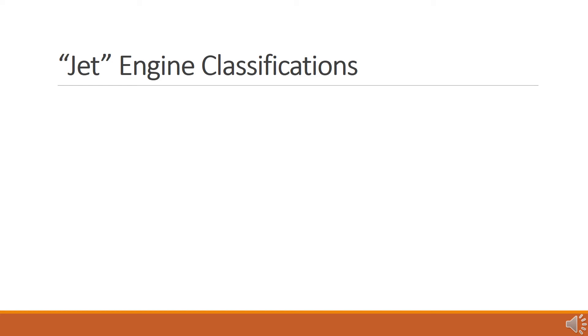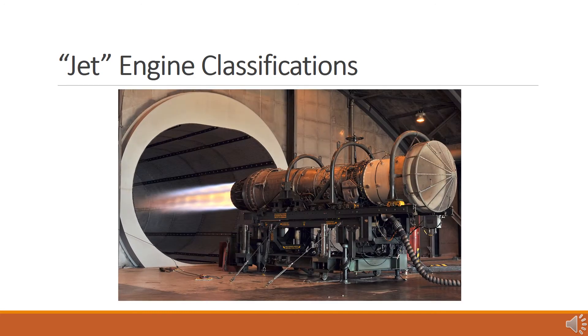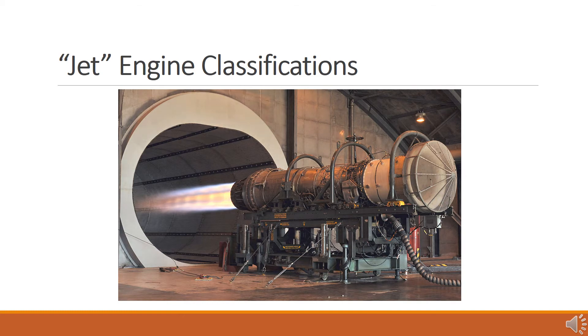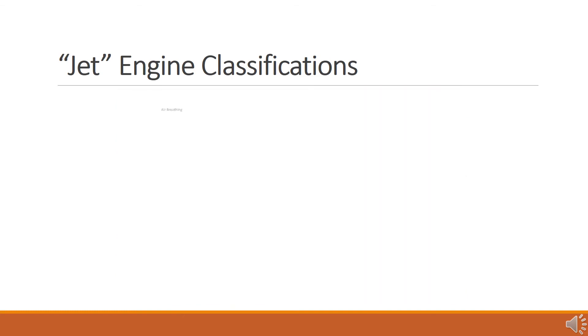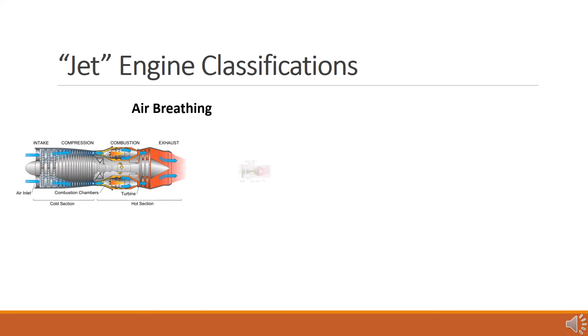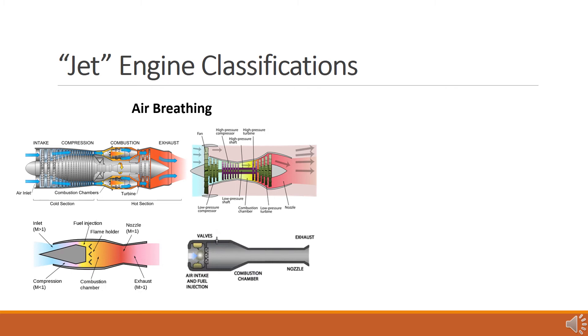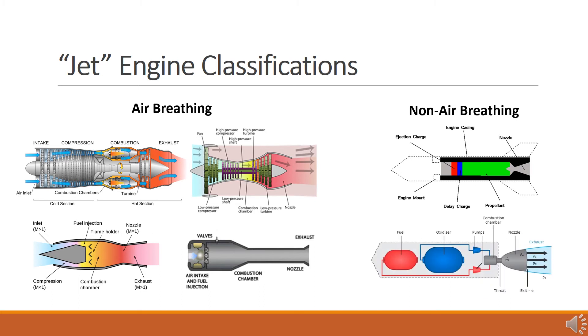A jet engine is a reaction engine discharging a fast moving jet that generates thrust by jet propulsion. In other words, a jet produces thrust by propelling backwards a mass of material at high velocity. This broad definition includes air breathing jet engines, such as turbo jets, turbo fans, ram jets, and pulse jets, as well as non air breathing jet engines such as solid fuel or liquid fuel rocket engines. In general, all jet engines are combustion engines.